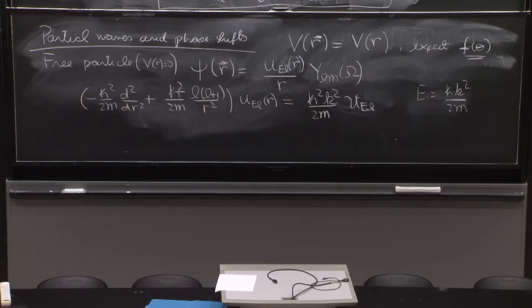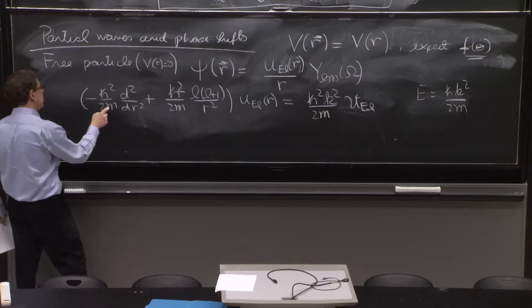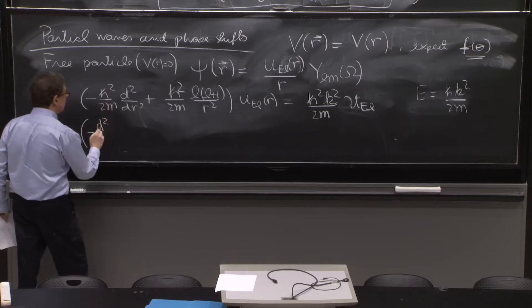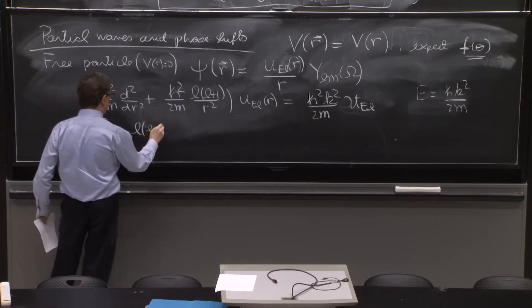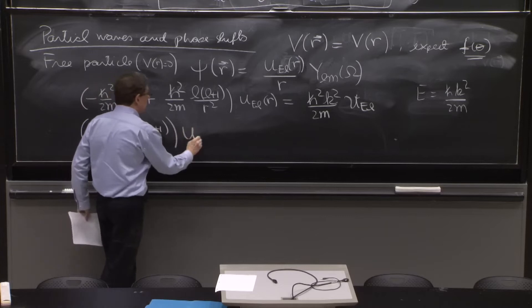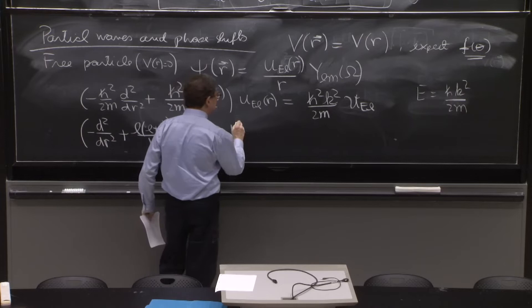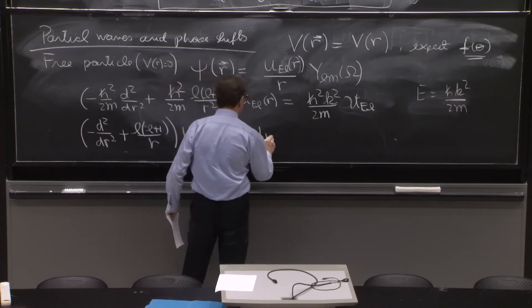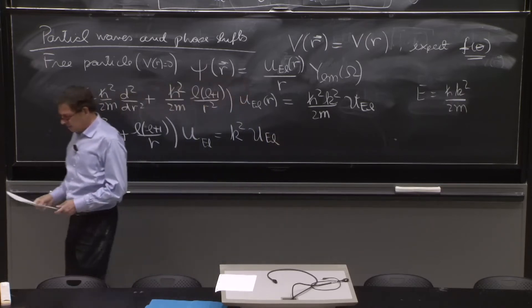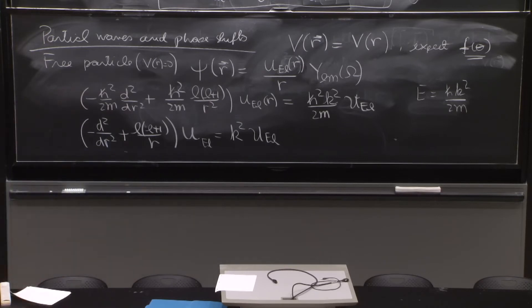Well, there's lots of h-squareds, k-squareds, and 2m's. So we can get rid of them. Cancel the h-squared over 2m. You get minus d second dr squared, plus l times l plus 1 over r squared, u_el is equal to k-squared u_el. It's a nice equation. It's the equation of the free particle in spherical coordinates.